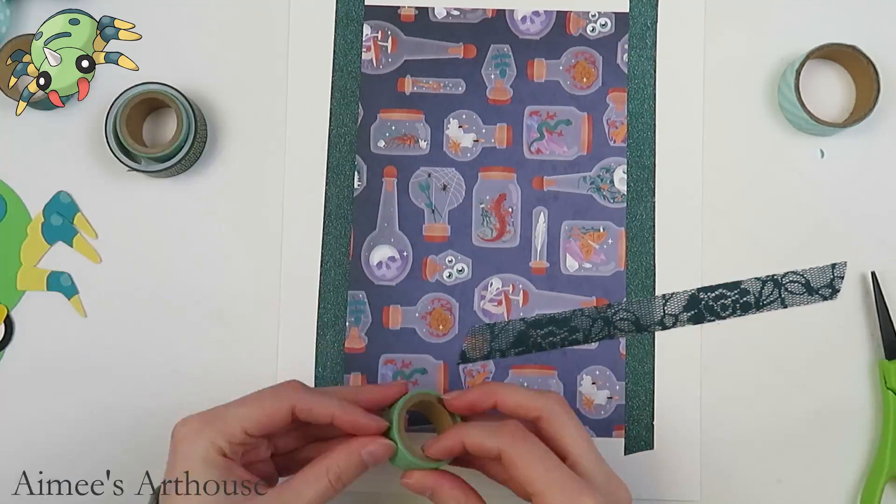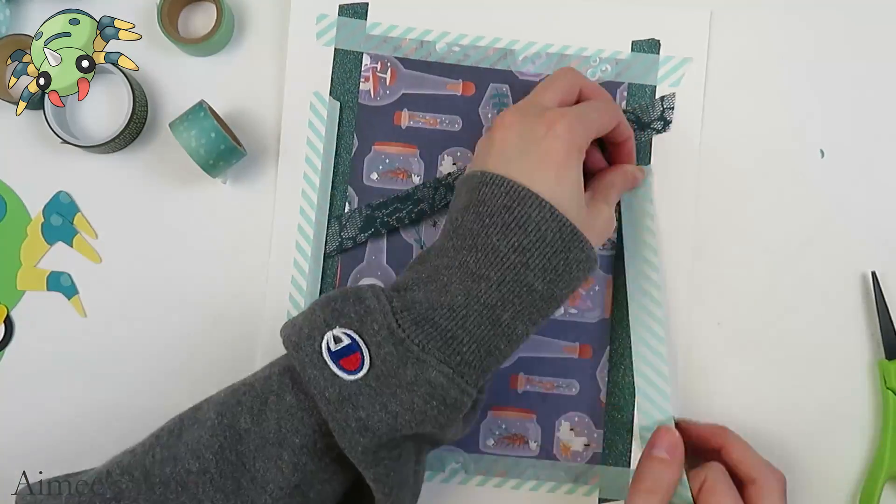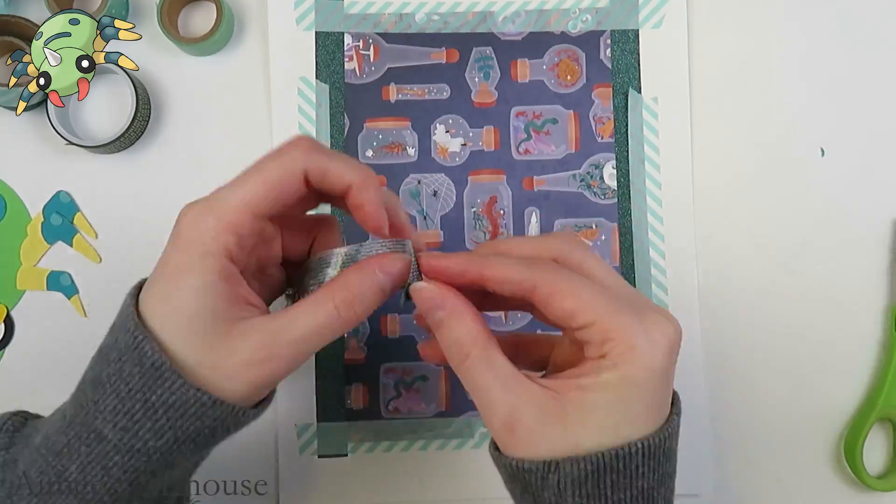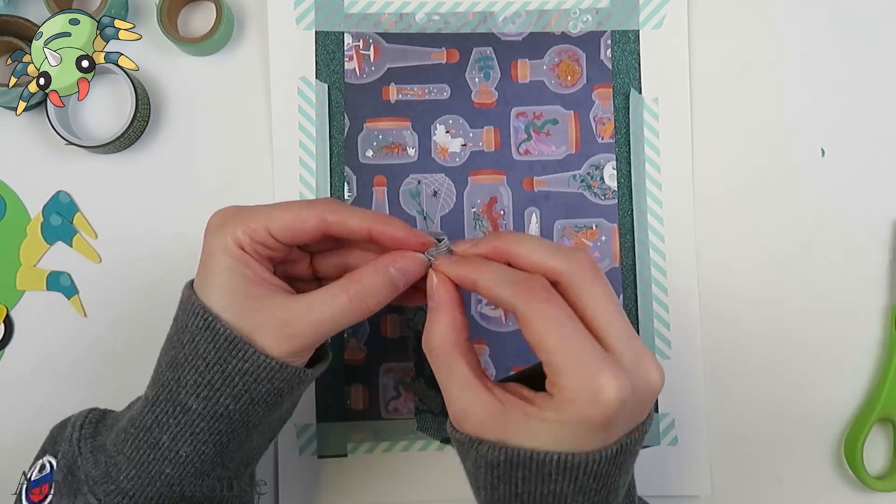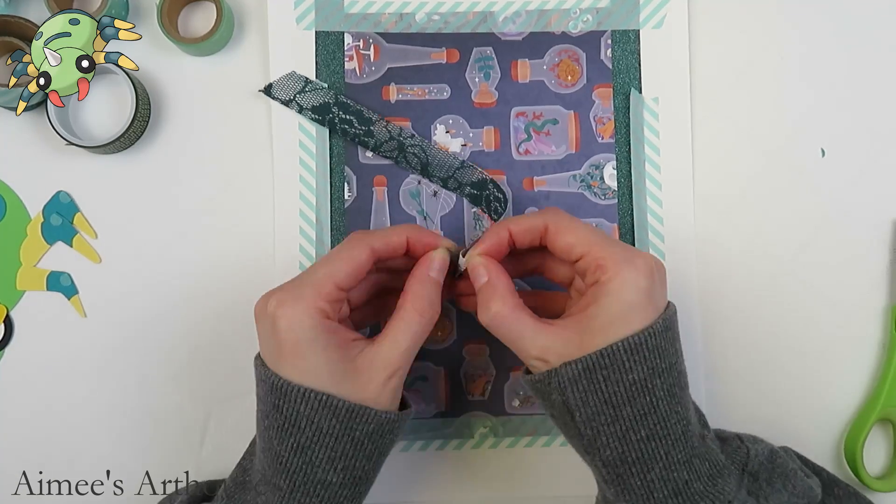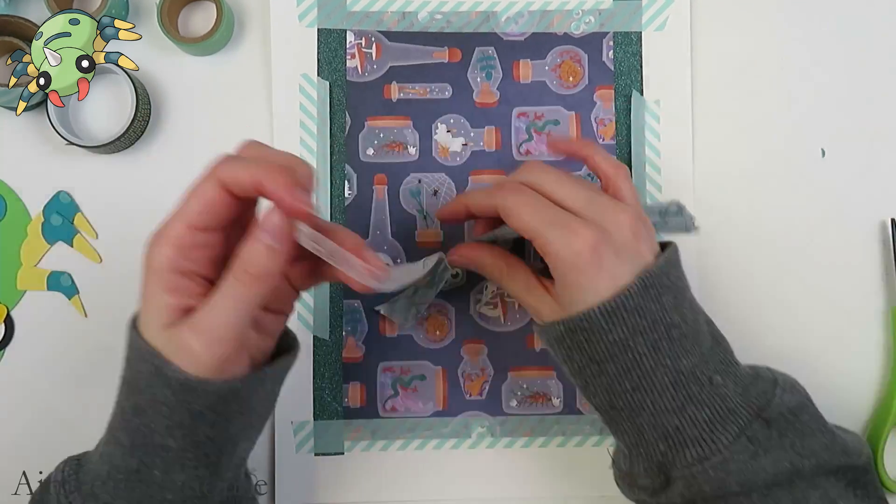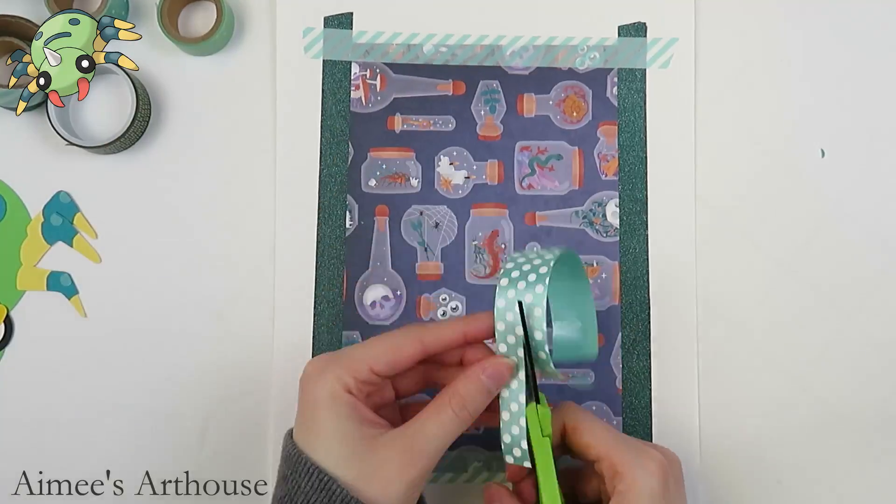For washi tape, I have this really pretty sparkly tape, and then a striped tape. Was I able to get that fabric tape to work? I don't remember, but sometimes that one I can't get the backing off of. I tried to use it for another Pokemon recently, and it did not work. It's okay. I only paid 50 cents for that roll of fabric washi tape, so not a huge deal.